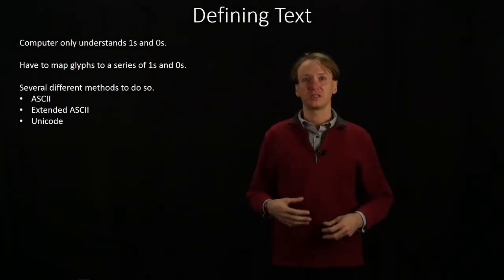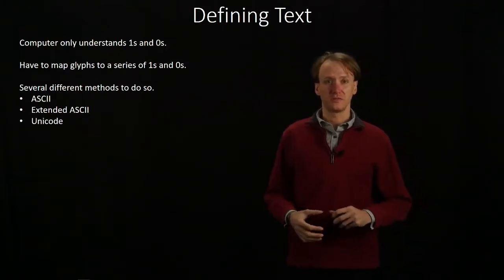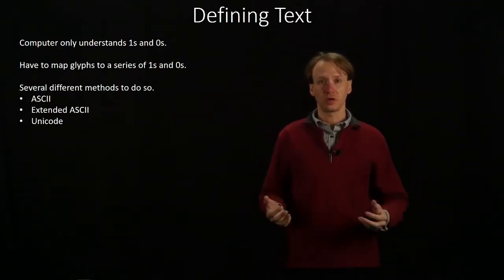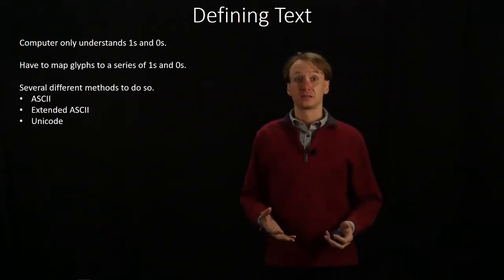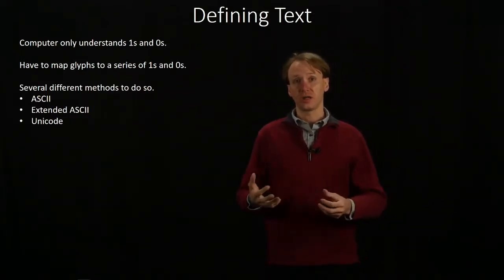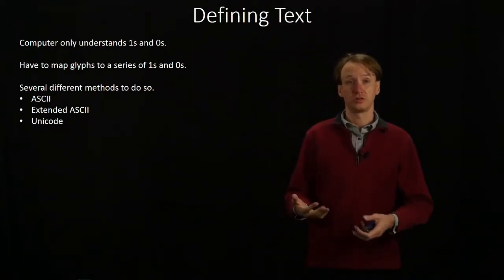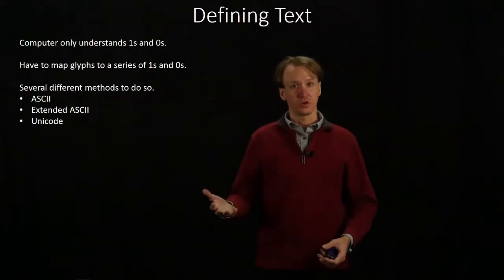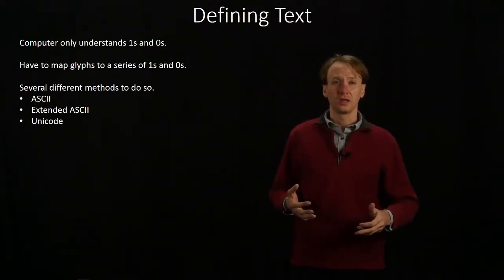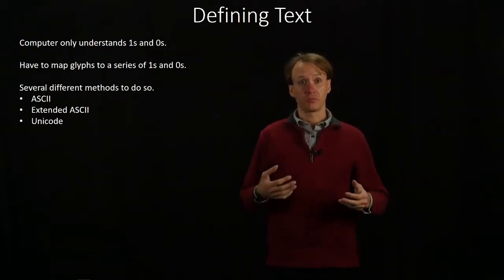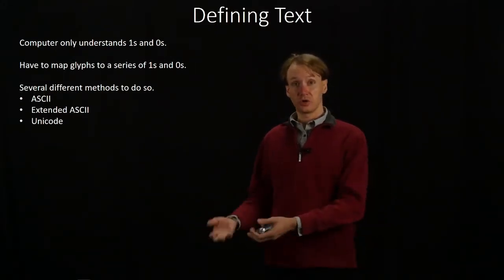So far, we've focused on representing numbers in our computer. We've used our zeros and ones to represent various integers and floating point numbers. But we'd also like to be able to implement text. We'd like to be able to read and write and interact with our computer using letters as well as numbers. But since our computer really only understands ones and zeros, we have to find a way to map the glyphs from the language that we understand into those ones and zeros that the computer can understand.